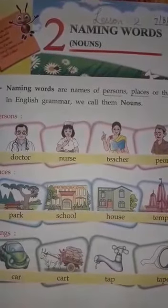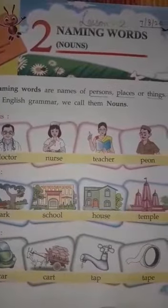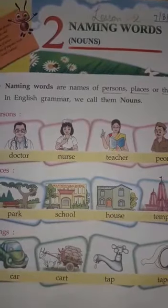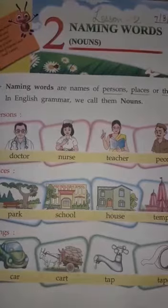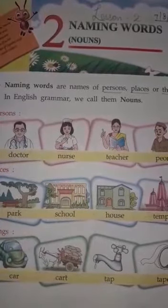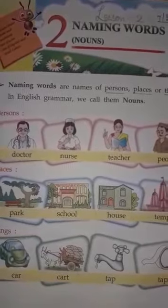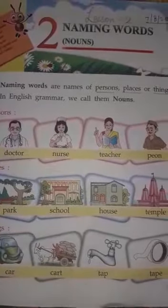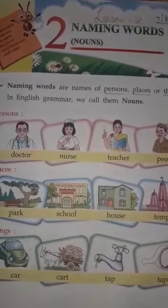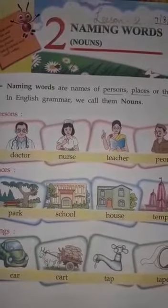In this lesson you learned that all persons, places, things, and animals have their names. All these naming words are called nouns. Today we will complete the remaining portion of this chapter.